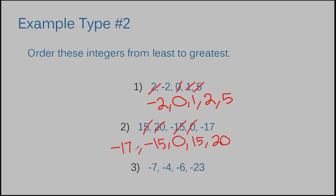I'm going to do one more example like this — example number three. I have negative seven, negative four, negative six, and negative 23. They're all negative this time and I don't have a zero. That's okay — remember, the negative runs in reverse. Just like on the right side of zero we'd have one, two, three, four, five going left to right, these are going to go in order from right to left. The smallest one — not considering the negative signs — would be negative four. So that means the number before that is negative six, then negative seven, then negative 23. The order from least to greatest is: negative 23, negative seven, negative six, negative four.